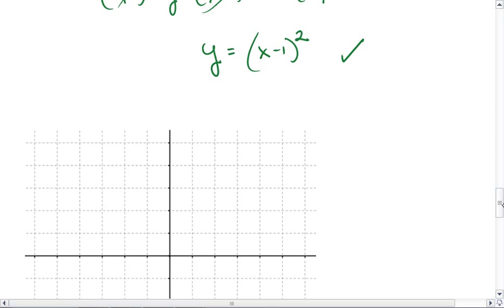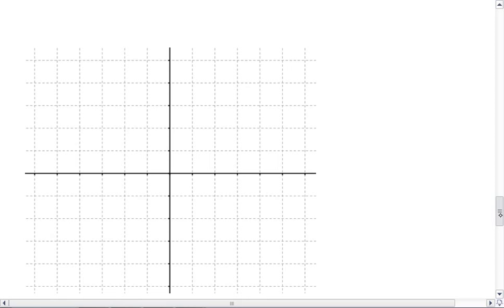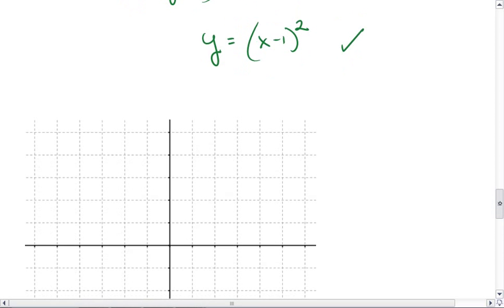So in this case, I'm going to get a parabola. Let's look at our graph. That has a vertex at 1, 0, and is going up.